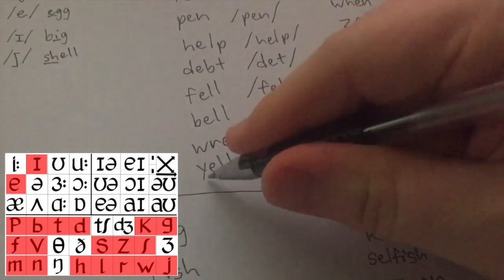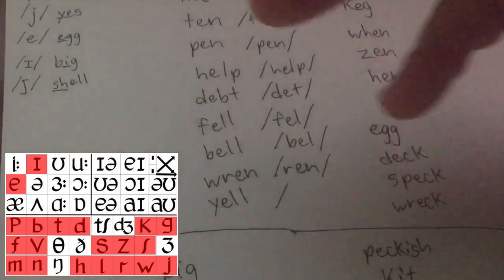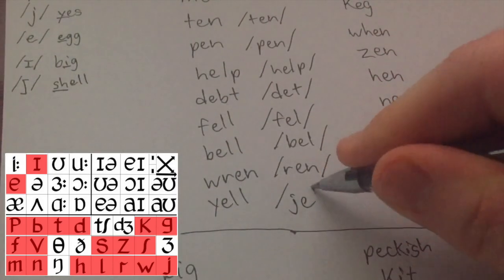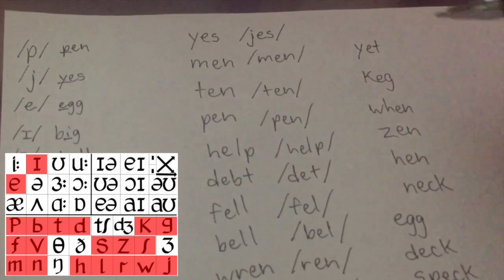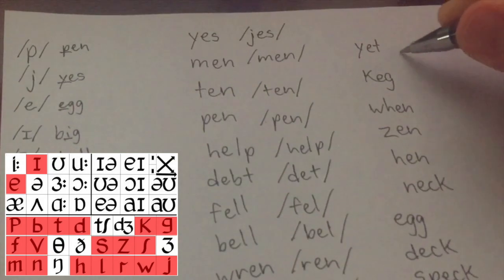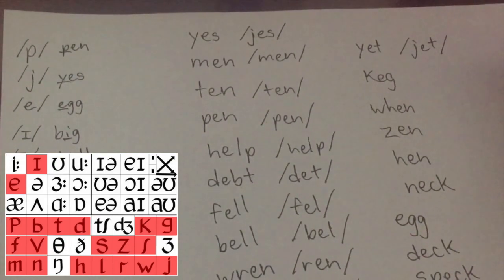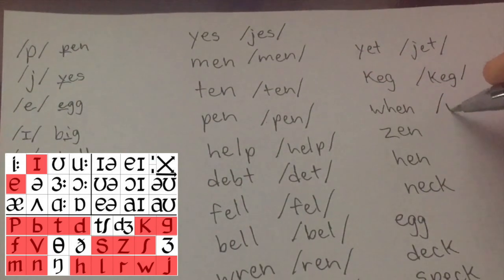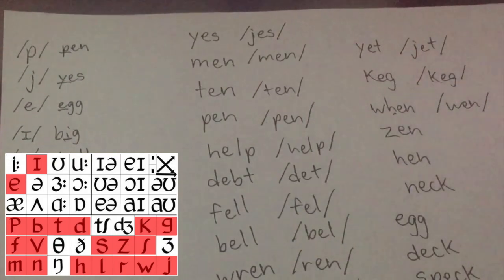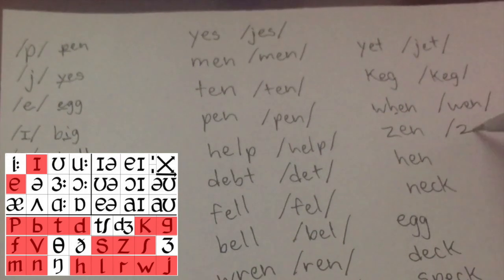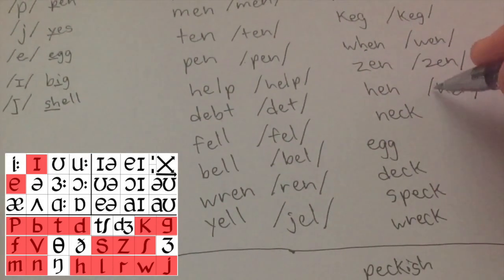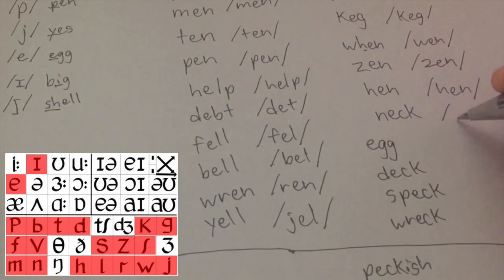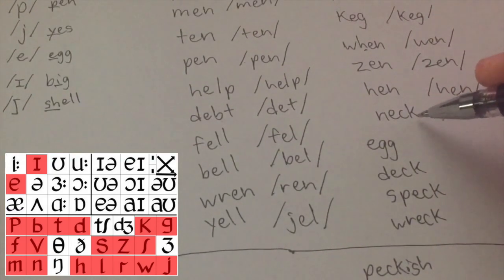And remember that sound? Yelled. Yet. Keg. When. You can't hear the H, right? Zen. Hen. Don't forget to close the brackets here. You need that close.